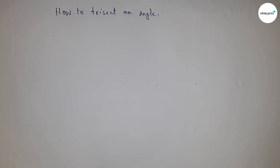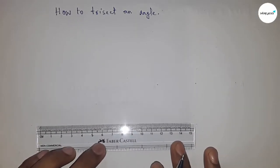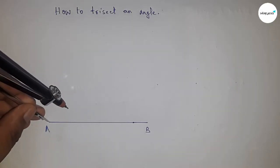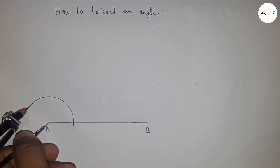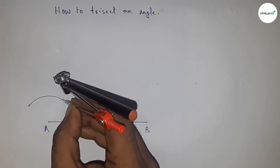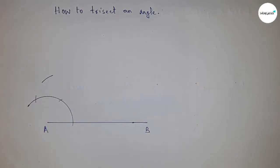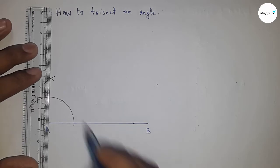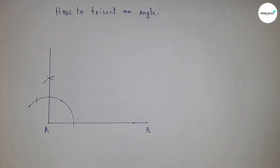I am taking a 90-degree angle to trisect — you can trisect any angle. First, drawing a line of any length AB. Putting the compass here and taking any radius, drawing an arc, then with the same length cutting arcs here, here, and here. Joining these points gives the 90-degree angle. Checking with the protractor — this is perfectly 90 degrees.